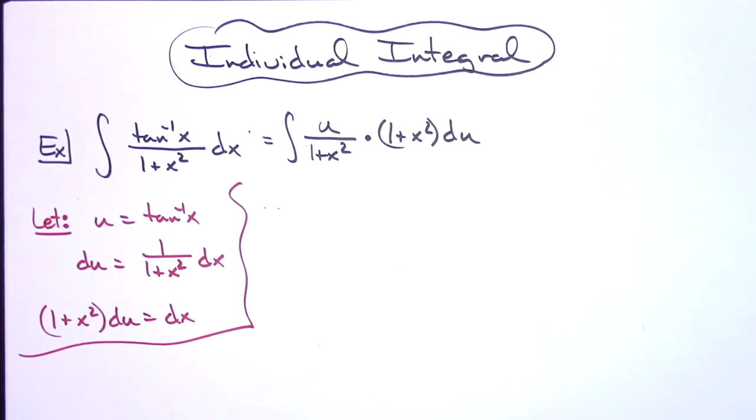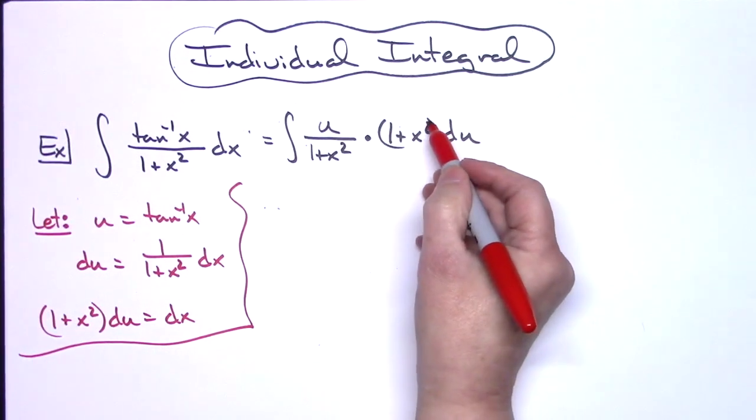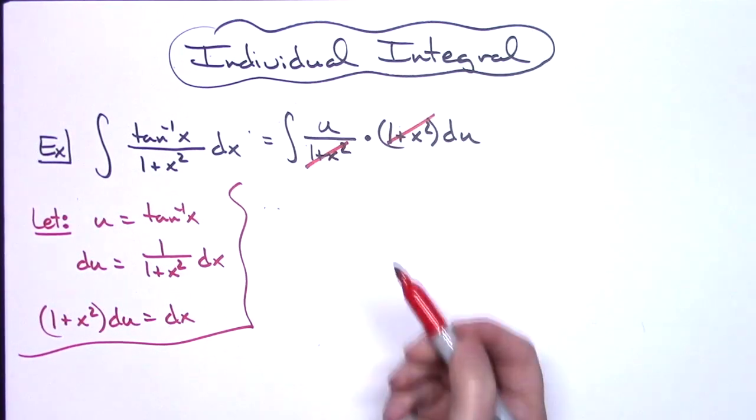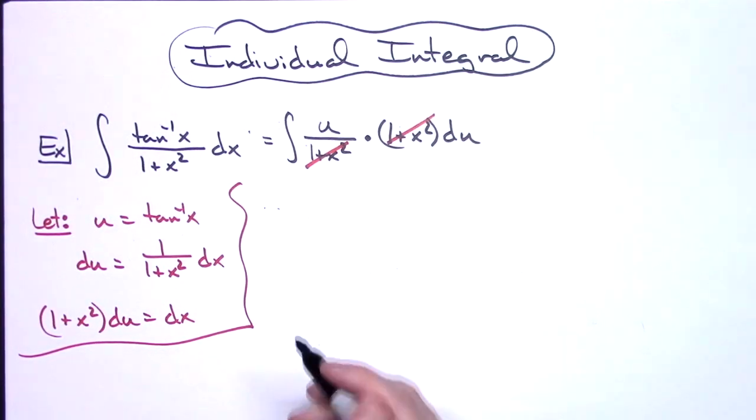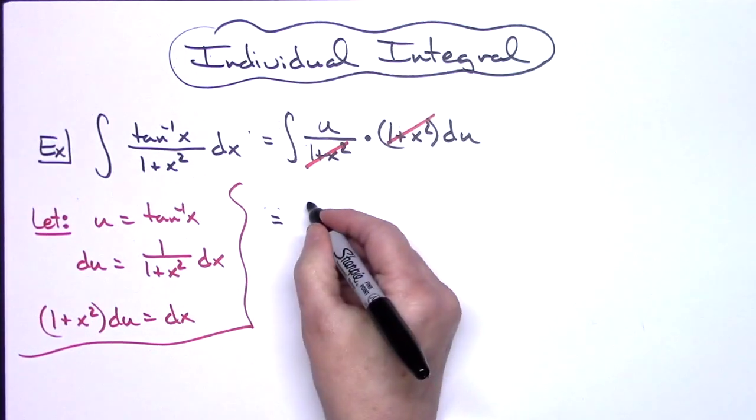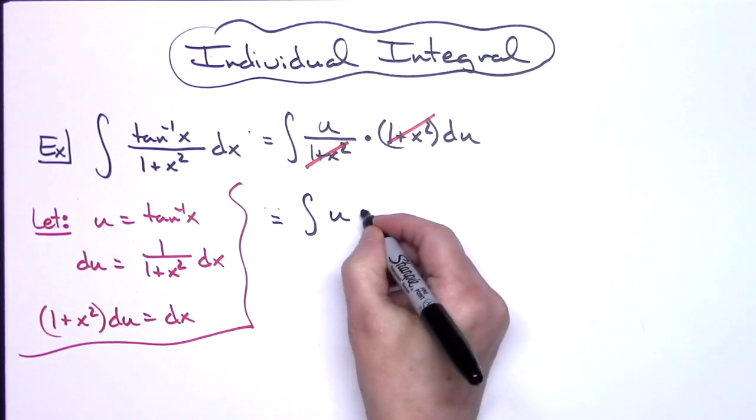What that's going to allow me to do then is cross off the 1 plus x squareds, which is what we need to get rid of there. So then I'm only going to be left with the integral of u du.